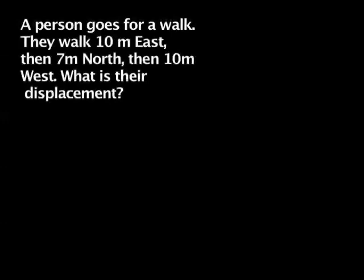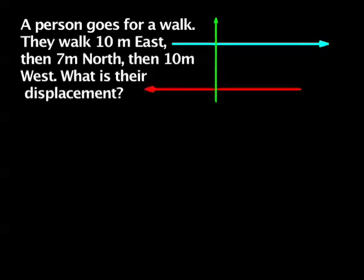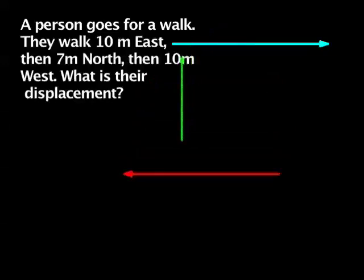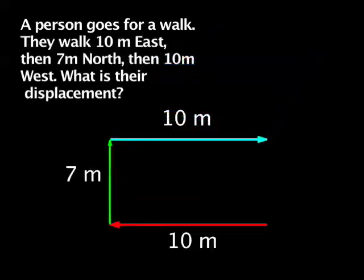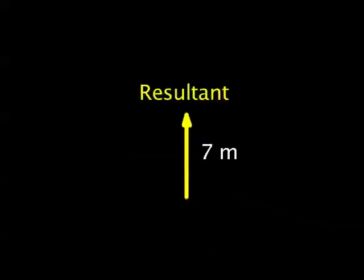A person goes for a walk. They walk ten meters east, seven meters north, then ten meters west. What is their displacement? If we align the vectors from tip to tail, we can see that the resultant displacement is seven meters north.